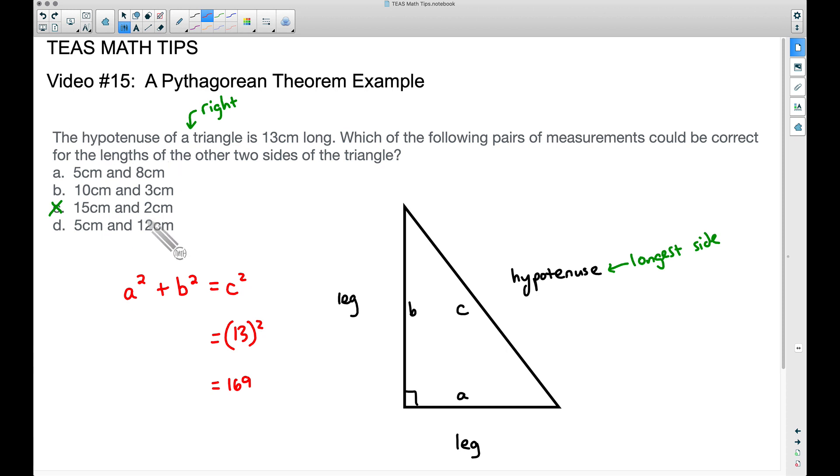To figure out the correct answer here, what we want to do is take these two sides, or these two sides, or these two sides. And one of them is going to be A, the other one is going to be B. It does not matter which one you let A be and which one you let B be. And the only one that's going to work here is D.